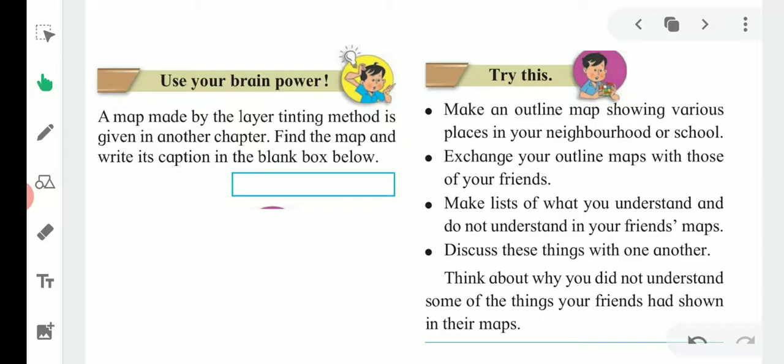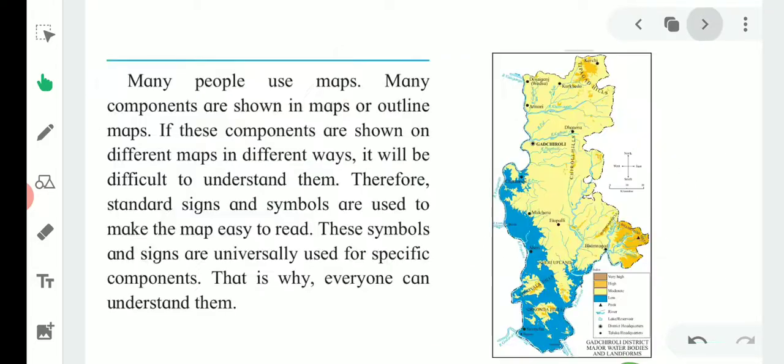A quick map ready karna hai and then you have to exchange the maps with your friends and discuss the map. Many people use maps. Many components are shown in maps or outline maps. If these components are shown on different maps in different ways, it will be difficult to understand them. We have to show the same type of symbols in each and every map. Agar hum har baar alag tariqe ka symbol use karenge, then it's difficult to understand the map. So it's compulsory to use one type of symbol or a sign.